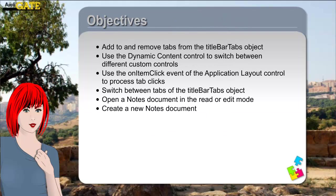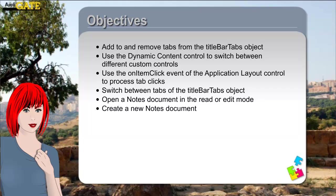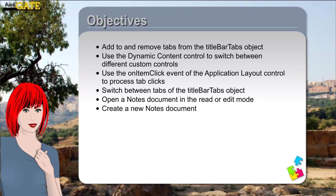The objectives of this course: after this mini-course you will be able to manage the tabs of the Title Bar Tabs object, such as adding and removing tabs. You will also be able to programmatically switch between the tabs, and show the content of a view control or a form with the data of a Notes document by using the Dynamic Content Control.